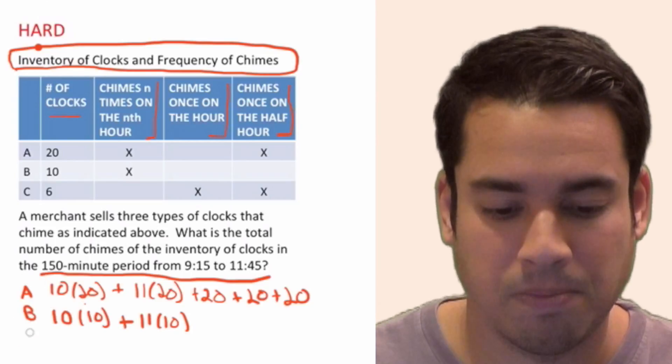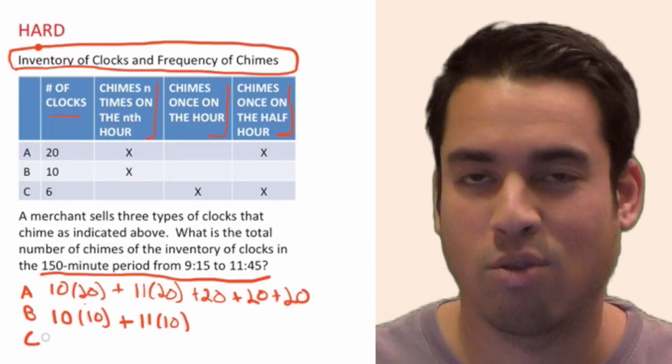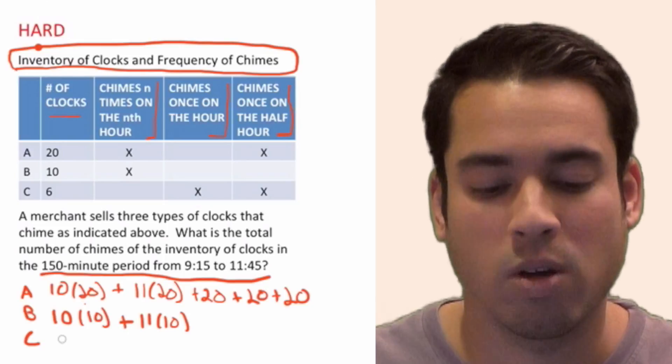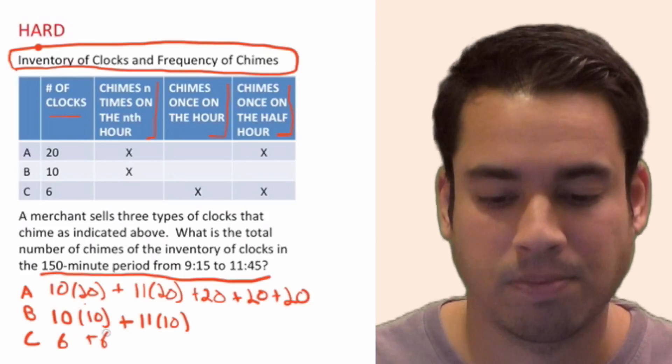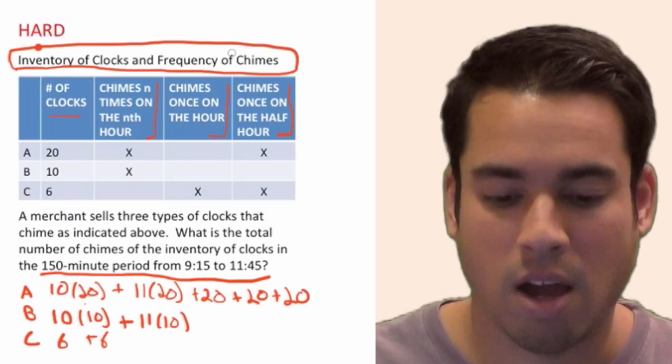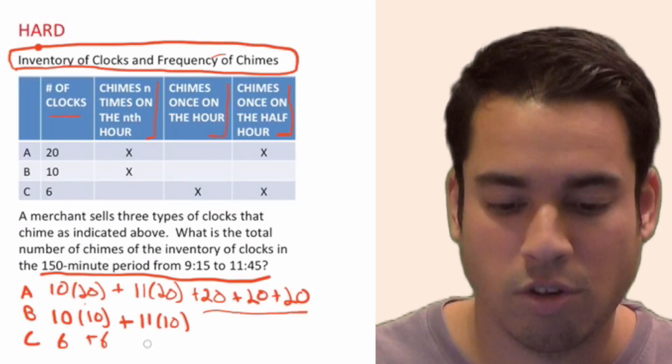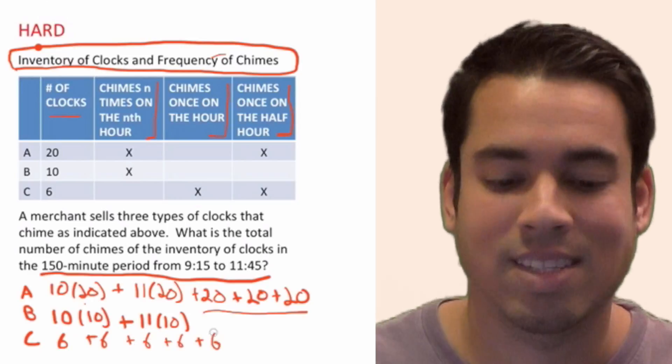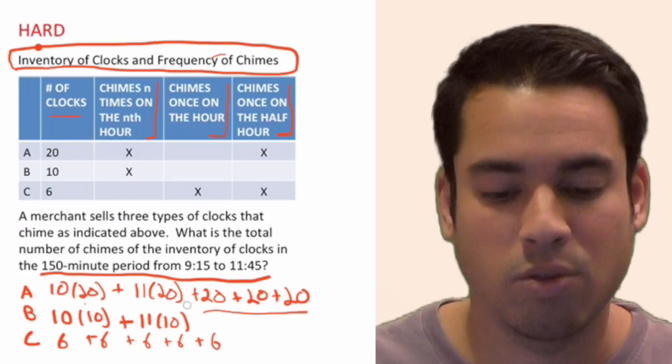Now let's think about C. We have only six clocks, and we have chimes once on the hour. So remember we have 10 and 11. But these are only going to chime one time. So we're going to have a total of six chimes at 10, six chimes at 11, and then what's this last one? They also chime once on the half hour. So how many half hours do we have? We figured that out in A. So here we're going to have plus six, plus six, plus six, because that's going to be for 9:30, 10:30, and 11:30.